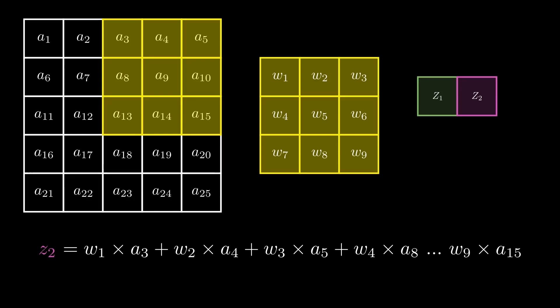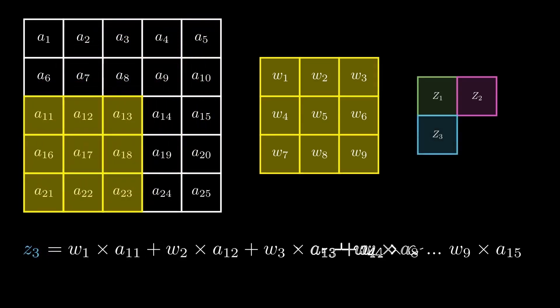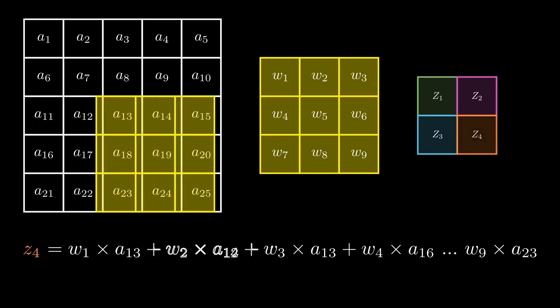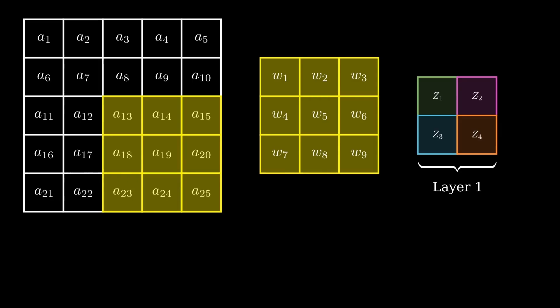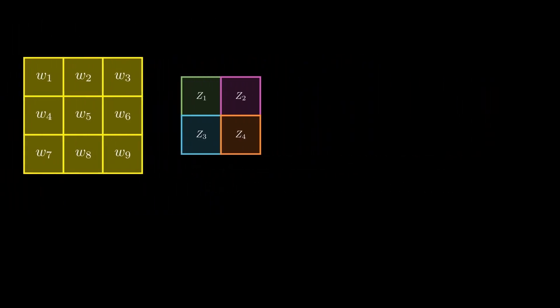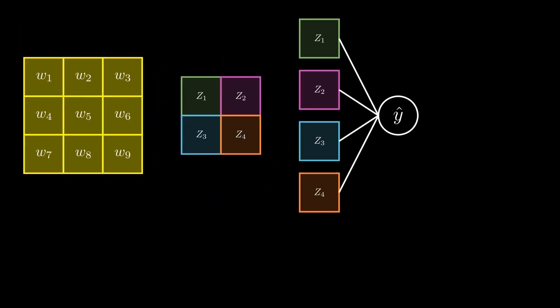Since there are no more input values to the right, we move the kernel two steps down and all the way to the beginning and repeat the multiplications. This is the third step in the convolution and the output is Z3. We then move the kernel two steps to the right and repeat the multiplications. This is the fourth step in the convolution and the output is Z4. After the convolution, we end up with an output matrix which we can call layer one. We flatten out layer one and output a prediction which we will denote as y-hat. Y-hat can then be used to calculate the loss.